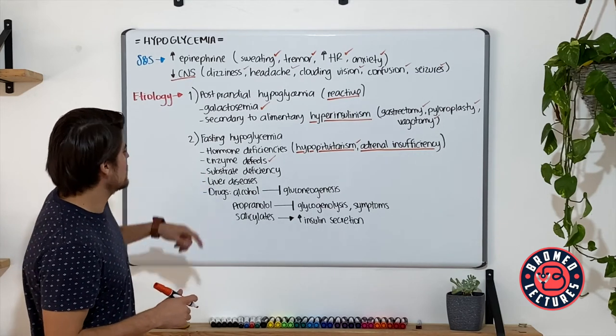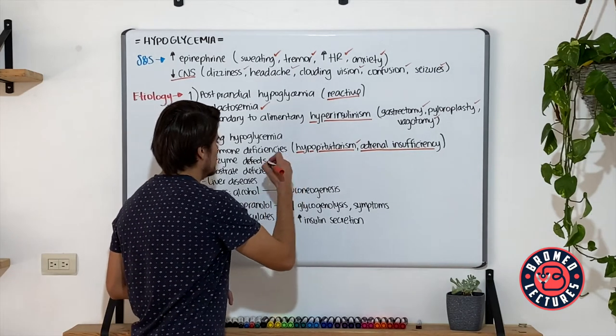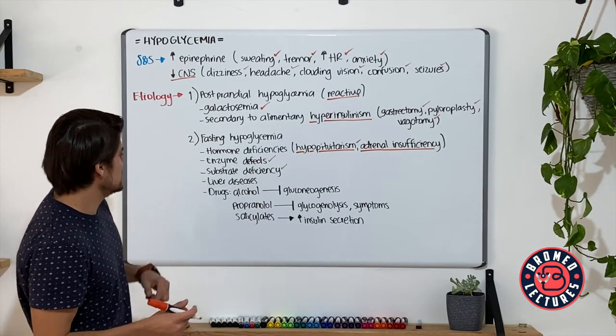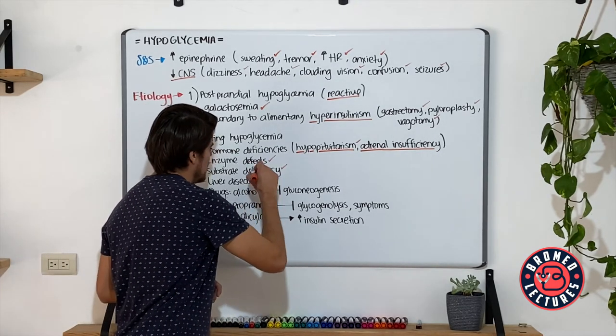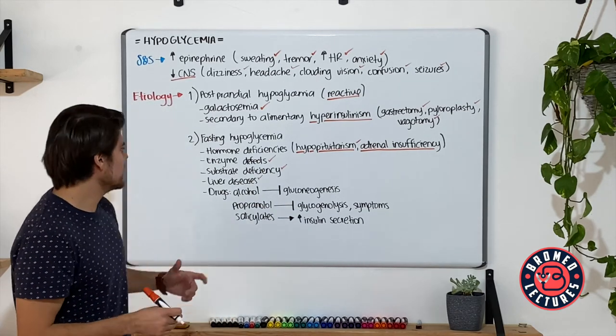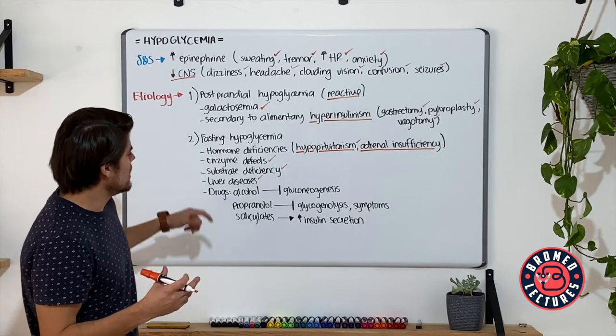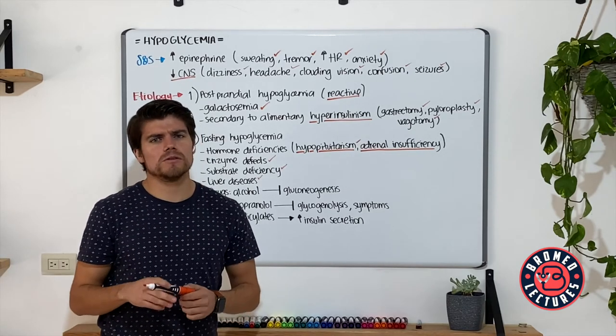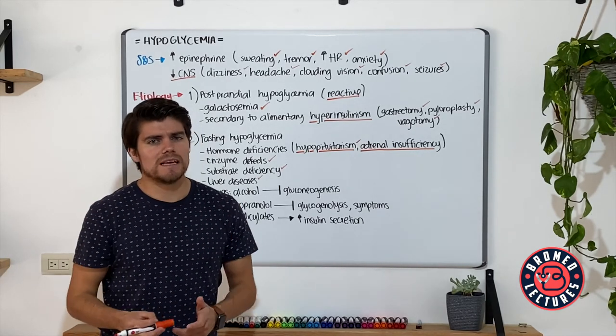And of course, substrate deficiency, patients that have malnutrition may develop hypoglycemia. Liver diseases, if they are at an advanced stage, may also develop hypoglycemia because the liver is an important organ for gluconeogenesis and for glycogen storage.